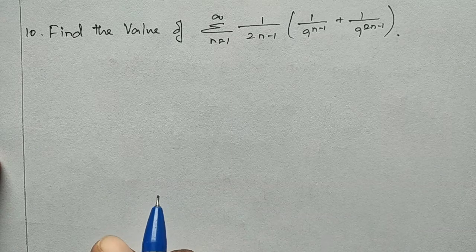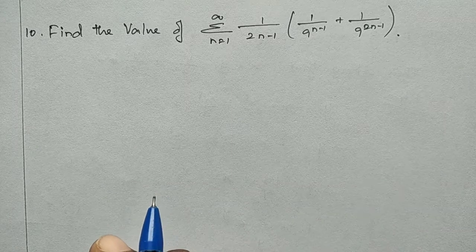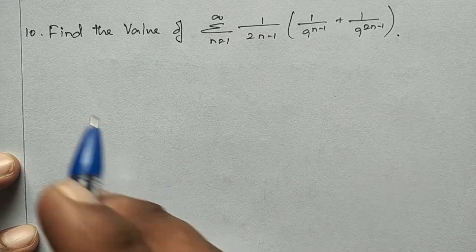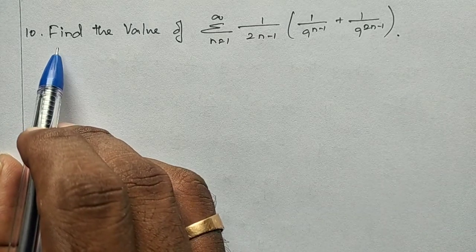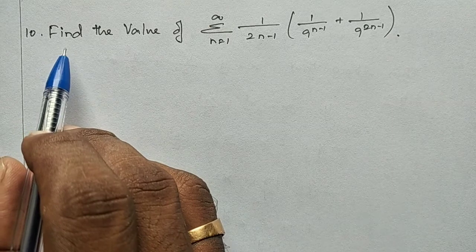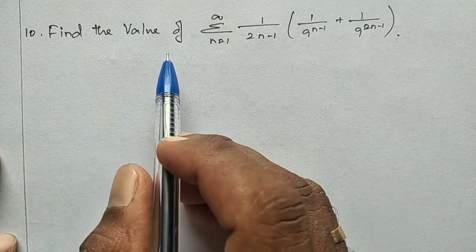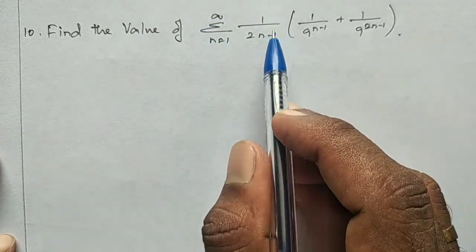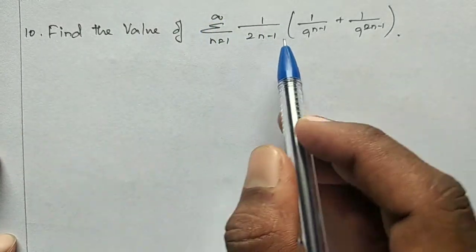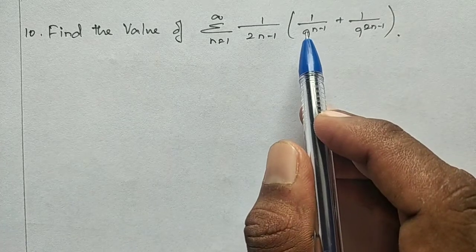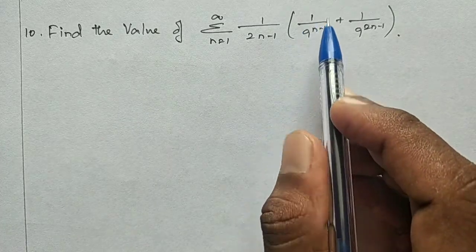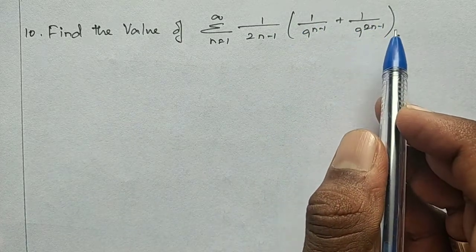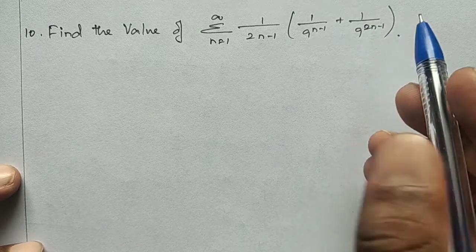Students, 11th class, exercise 5.4, question number 10 — that is the last question in this exercise. Find the value of summation n equal to 1 to infinity: 1 by (2n minus 1) into 1 by 9 power (n minus 1) plus 1 by 9 power (2n minus 1).